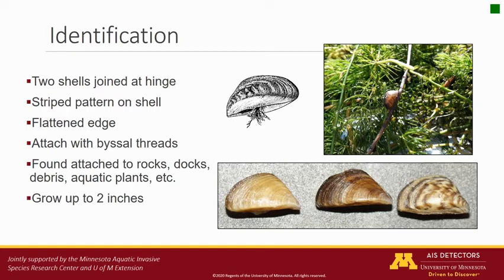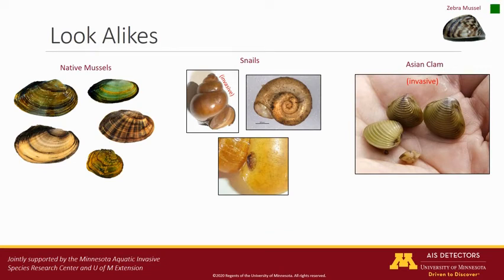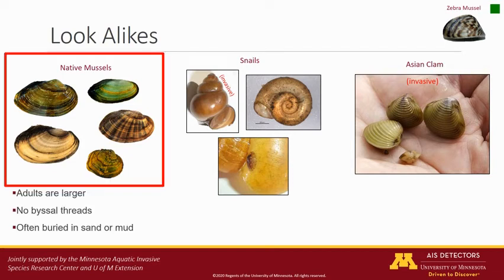You are most likely to find adult zebra mussels attached to the underside of objects floating in the water, attached to submerged portions of docks and lifts, submerged debris, aquatic plants, and rocks in shallow lake areas. Zebra mussels may be mistaken for a number of other mollusks commonly found in Minnesota waters. Native mussels, often called clams, are generally much larger than zebra mussels in their adult form. They do not have byssal threads to attach to other surfaces and are usually found mostly buried in the sand or mud. Zebra mussels can oftentimes be found attached to the exposed portion of native mussels.